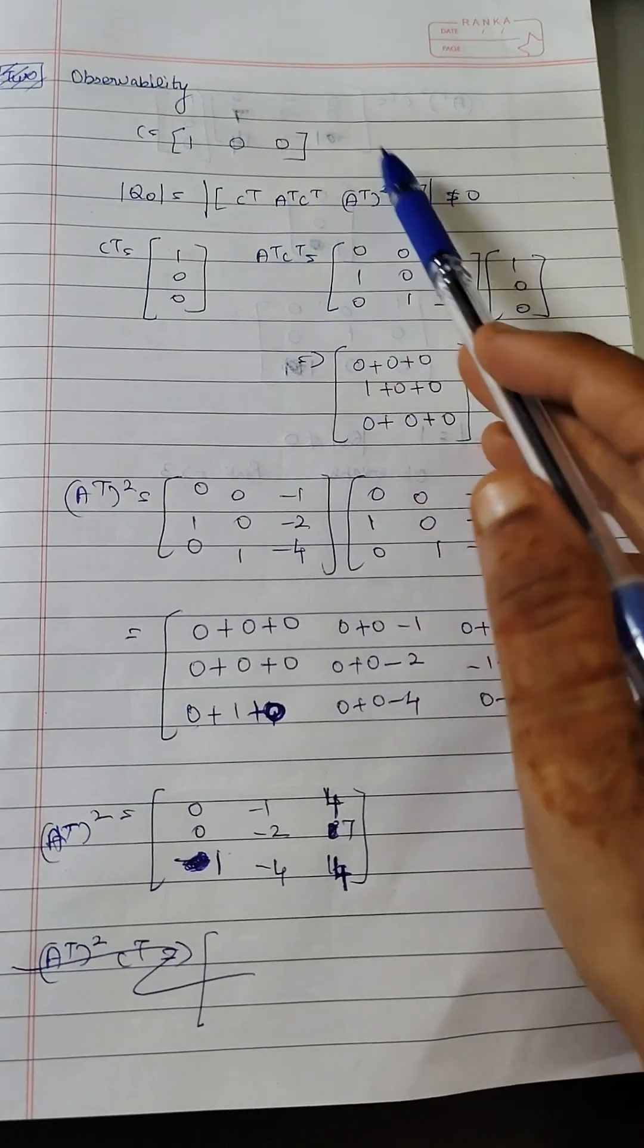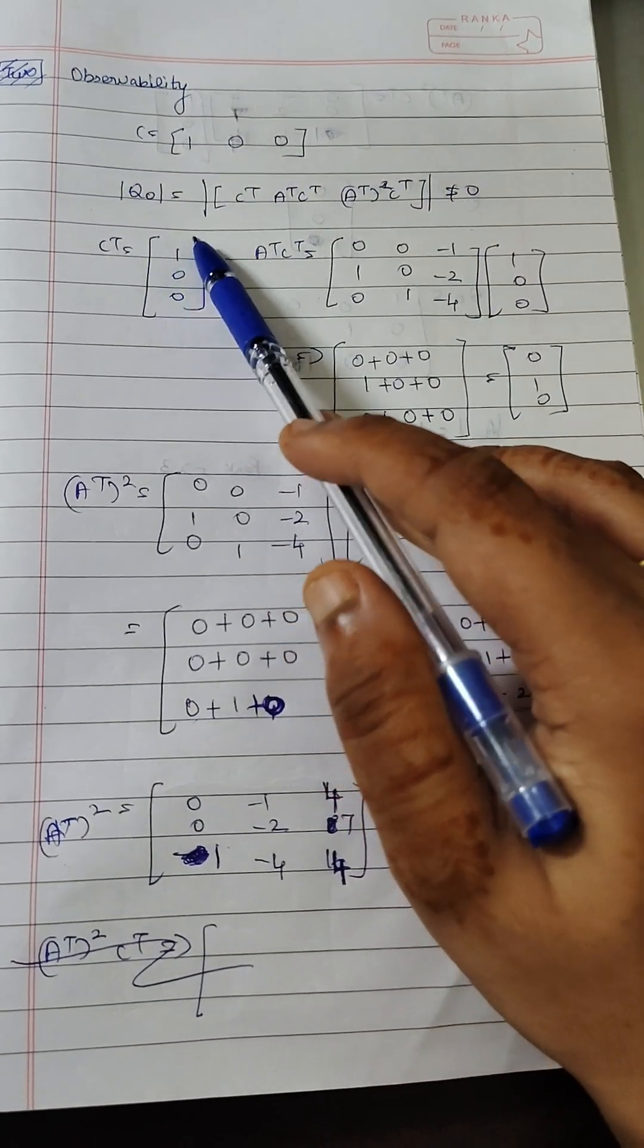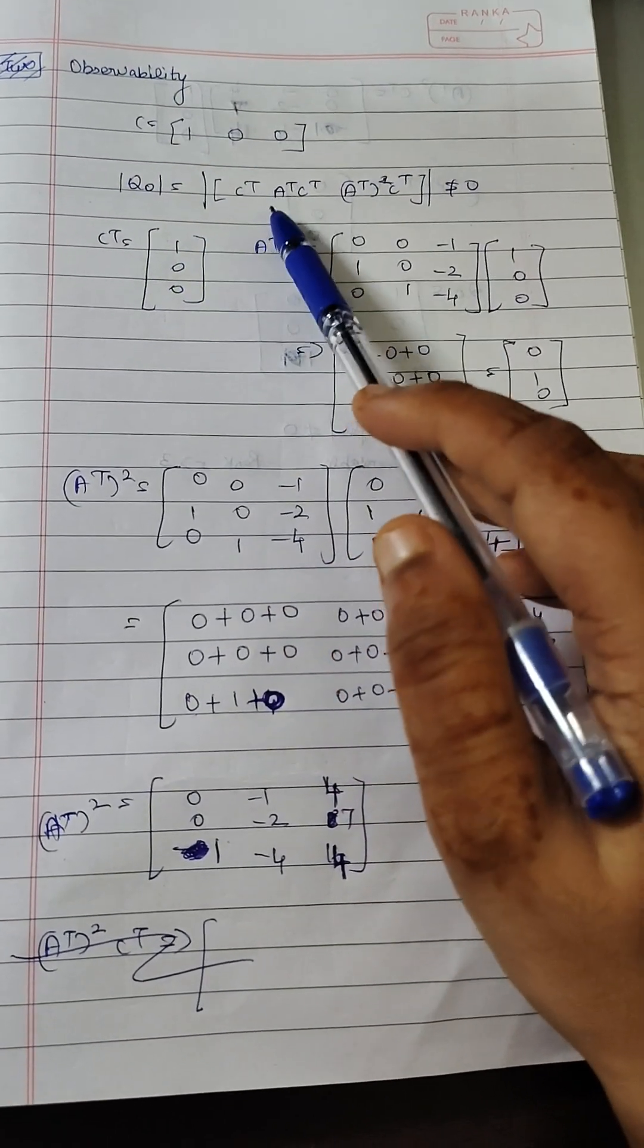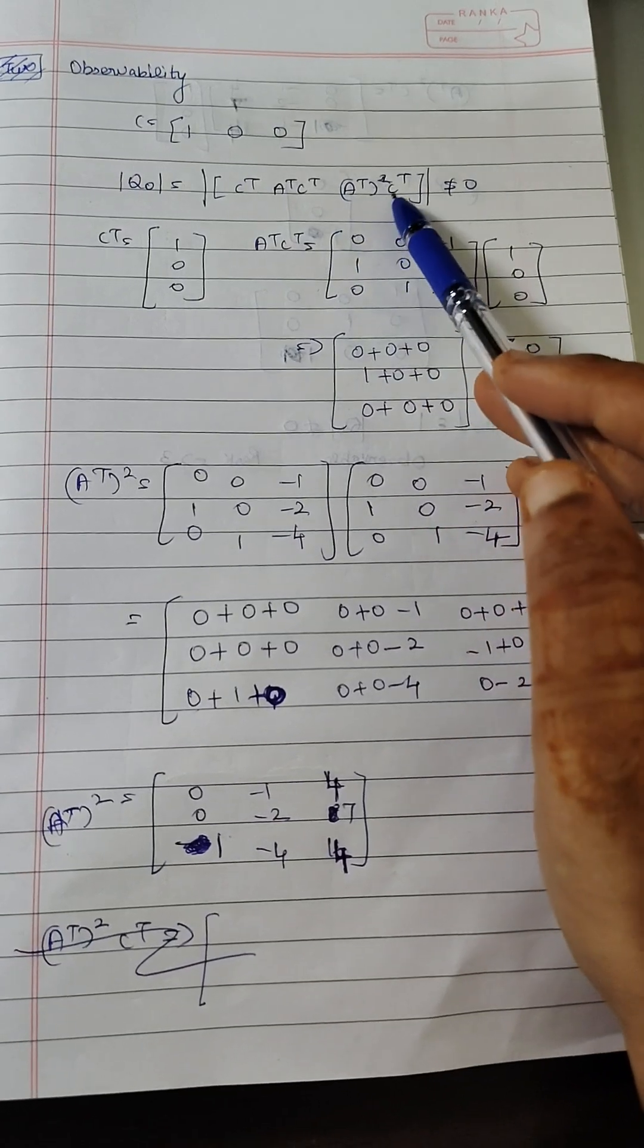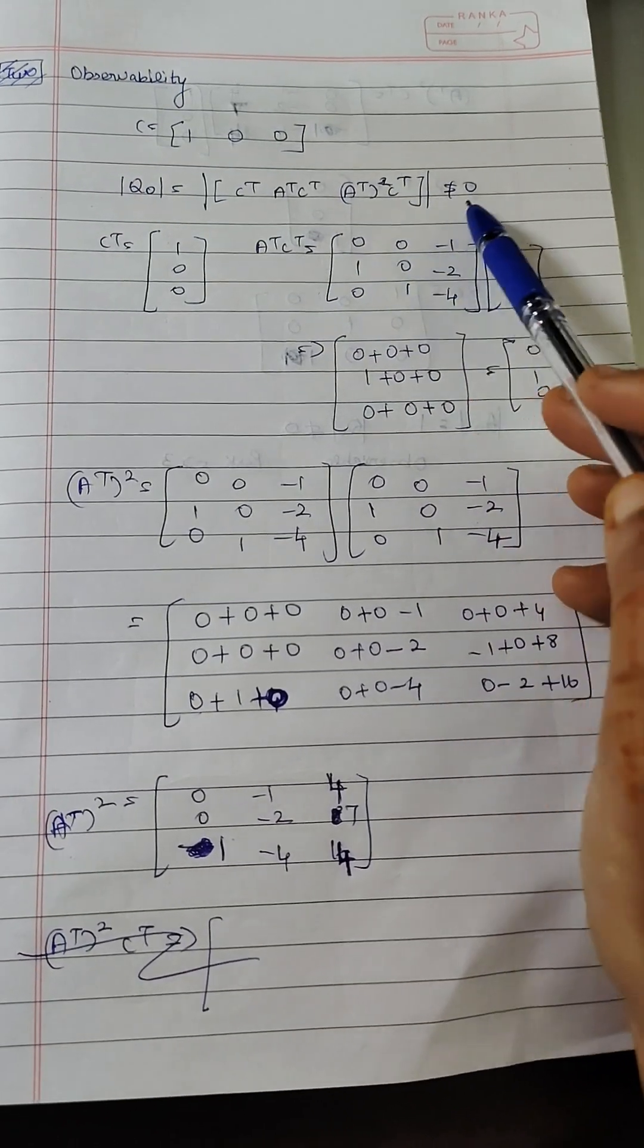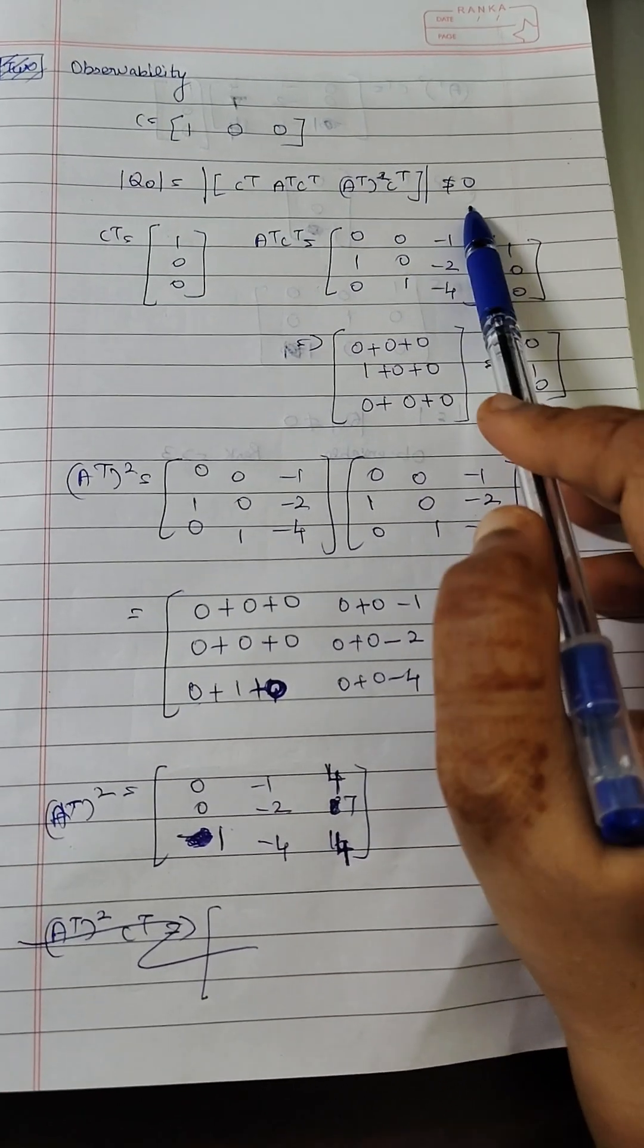So c is 1 0 0 and d is 0. So what is q naught? So it is c transpose, a transpose c transpose, a transpose square c transpose, modulus should not be equal to 0. This is a condition for observability.